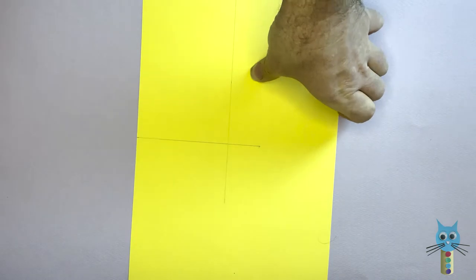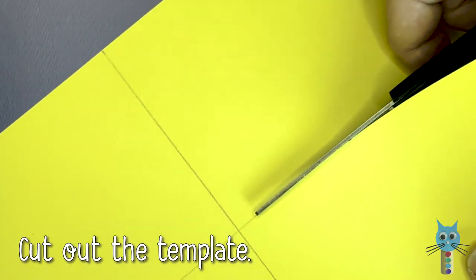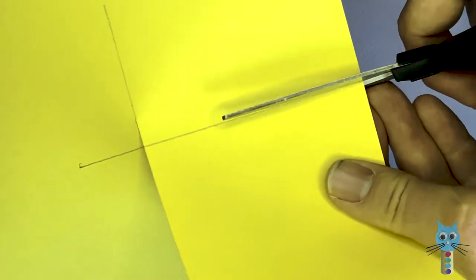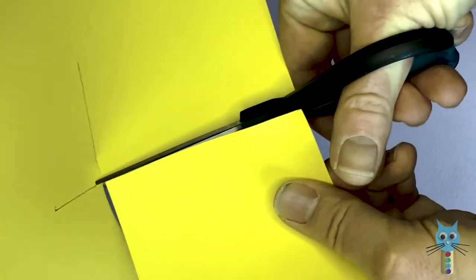So once these lines are drawn, I can go ahead, grab a pair of scissors, and then just cut along the lines there. Cutting along the length and then cutting along the width side, and then this is going to give me the card I need for the body of the cat.